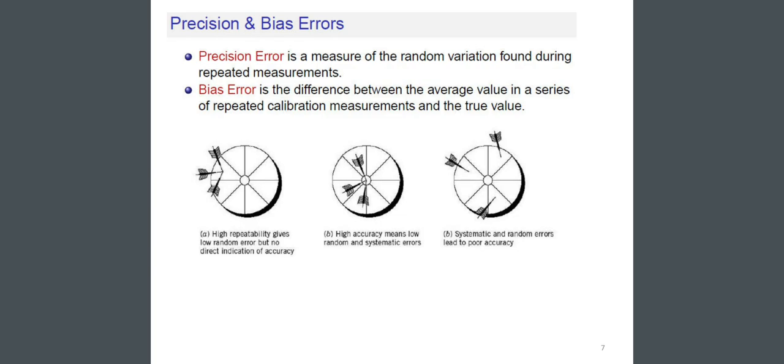Look at these figures. In the first figure, high repeatability gives low random error but no direct indication of accuracy. In the next figure, high accuracy means low random and systematic errors. And the last figure: systematic and random errors lead to poor accuracy.